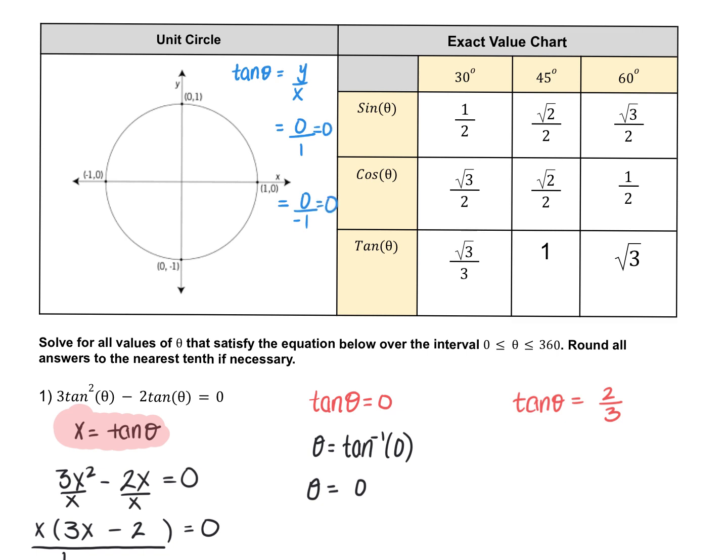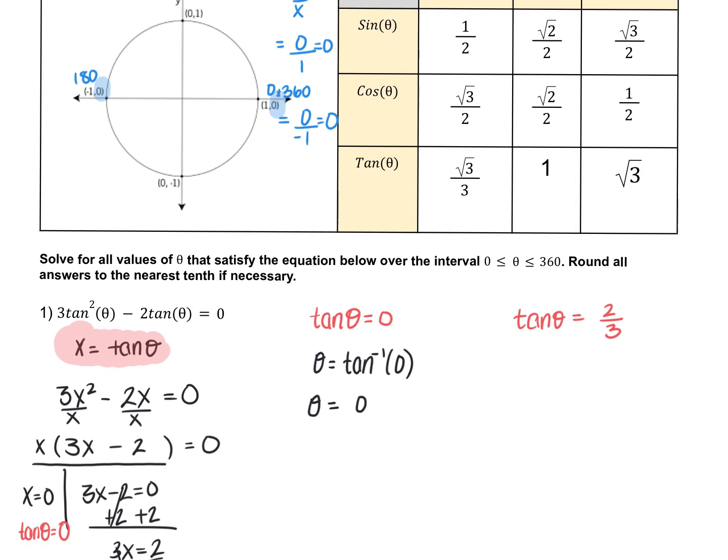So we're looking for the angle where the y value is 0. Wherever the y value is 0 is where this is going to work out. That happens to be here and here. So it's 0 degrees, 360 degrees, and 180 degrees. So technically, in this problem, there are three values that work for theta.